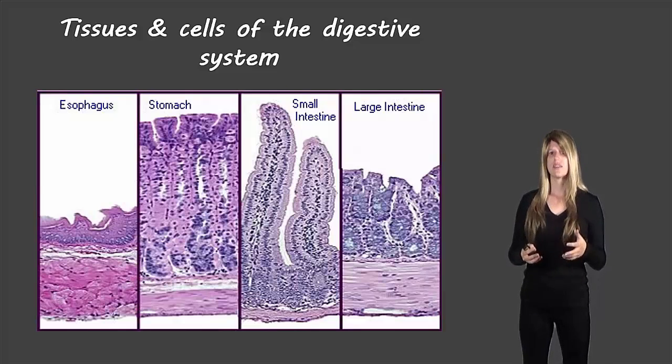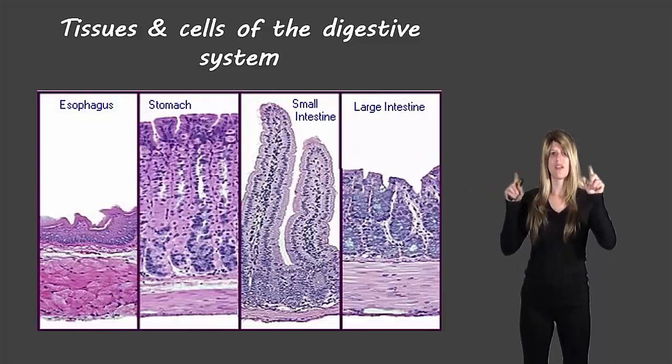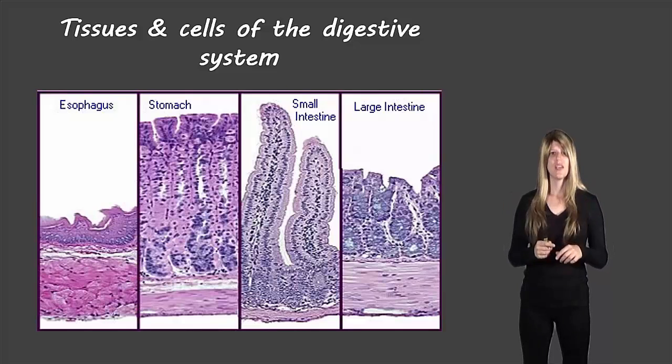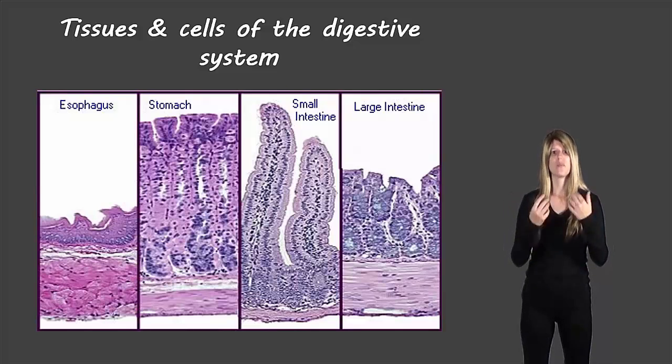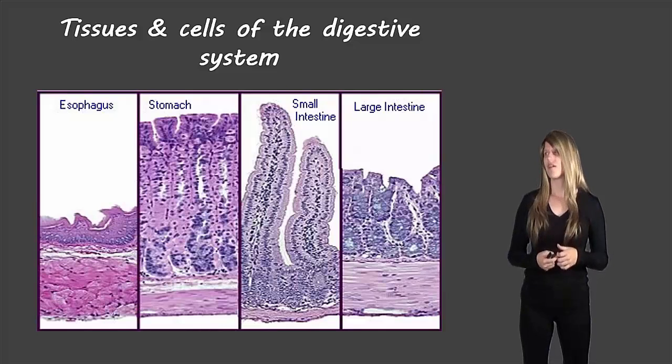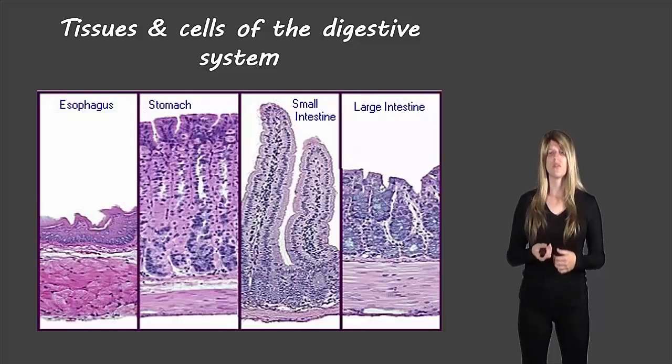The small intestine has these projections. They almost look a little bit like fingers, and then coming off of each of those, although you can't see it in this picture, you'd need a microscope, there are projections that come off of those, and that is just to increase the surface area, and that helps absorb more nutrients out of the food. And then finally, the large intestine has a relatively thick layer of epithelial tissue and it has specialized cells to help absorb the water.